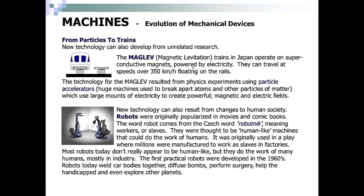New technology can also result from changes to human society. Robots were originally popularized in movies and comic books. The word robot comes from the Czech word robotnik, meaning workers or slaves. They were thought to be human-like machines that could do the work of humans. Most robots today don't really appear to be human-like, but they do the work of many humans, mostly in industry. The first practical robots were developed in the 1960s. Today, robots weld car bodies together, diffuse bombs, perform surgery, help the handicapped, and even explore other planets.